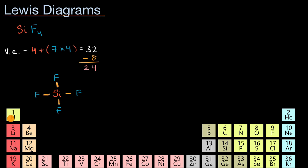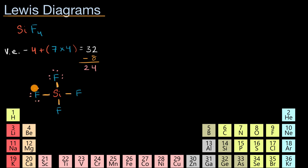Our general rule of thumb is to place those remaining electrons on the terminal atoms, with the goal of getting those terminal atoms to have eight valence electrons — satisfying the octet rule. Fluorine already shares two electrons in a bond, so it needs six more. We add six lone pair electrons to each of the four fluorines. That's six times four, accounting for 24 more electrons, which uses up all of our remaining valence electrons.